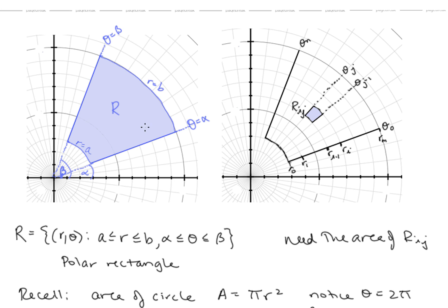If we're going to break up this region to take Riemann sums for volume, we need to think about what the subdivisions and sub-rectangles would look like. Breaking up our interval on r into m parts gives us r₀, r₁, r_{i-1}, r_i, and r_m. Breaking up our theta interval from theta₀ to theta_n gives us theta_{j-1} and theta_j, so that polar rectangle R_{ij} would be one of the sub-rectangles used in our Riemann sum.